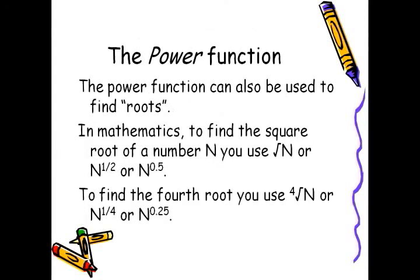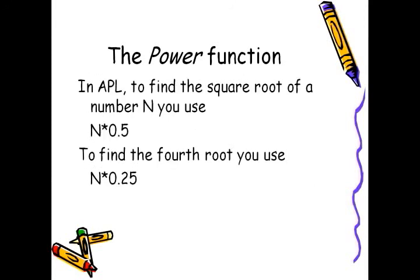The power function can also be used to find roots in math. If you want to find the square root of a number, you use n exponent 0.5. To find the fourth root, you would use n exponent 0.25. In APL, if you want to find the square root of a number, you do n star 0.5, and for the fourth root, you would use n star 0.25.